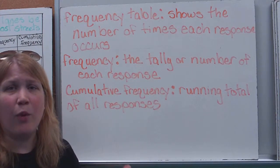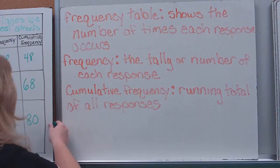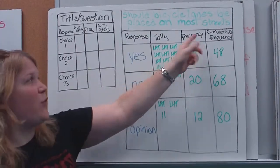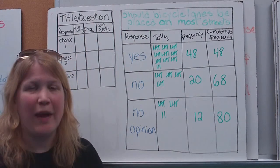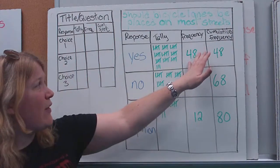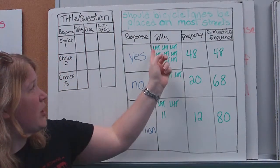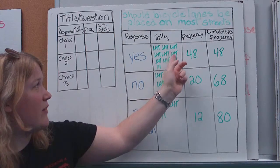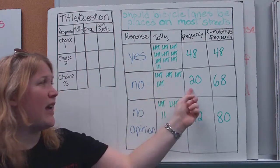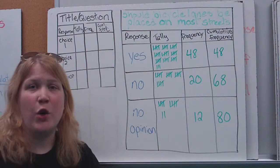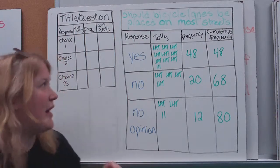But when we refer to frequency, what we're talking about is the number of times each response appears. So, if we look on the chart, I have one that says frequency. Now, tally is really the same thing, but the tally is what I'm doing as I'm asking. So, I'm not trying to keep a number in my head. I'm just making tally marks. So, to get my frequency, all I'm doing is counting up my tallies when I'm done asking the question. So, after I've completed this question, I'm going to count 5, 10, 15, 20, 25, 30, 35, 40, 45, 36, 47, 48. 48 people said yes. I counted my tallies. I see that 20 said no and that 12 had no opinion on the subject. So, that's the frequency. How many people said each response? That's our frequency.